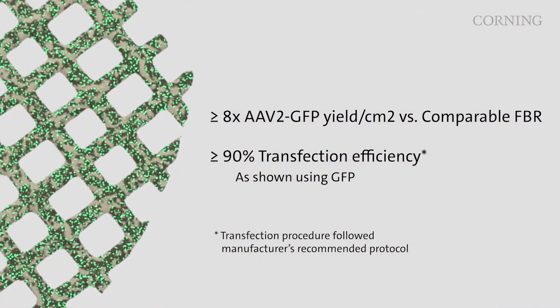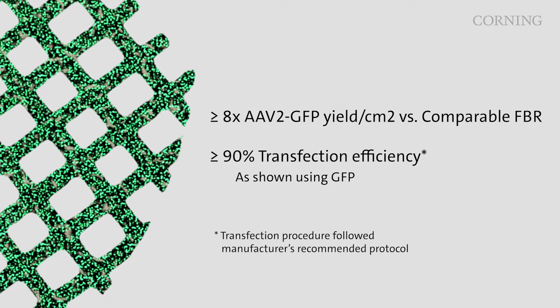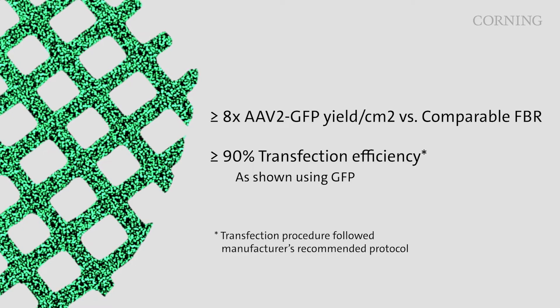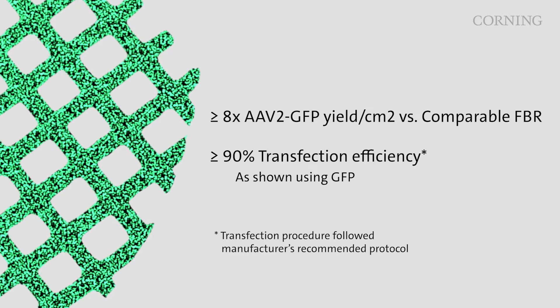Depending on the desired application, observed transfection efficiencies are routinely greater than 90% and viable cell harvest can achieve greater than 90% yield and viability.